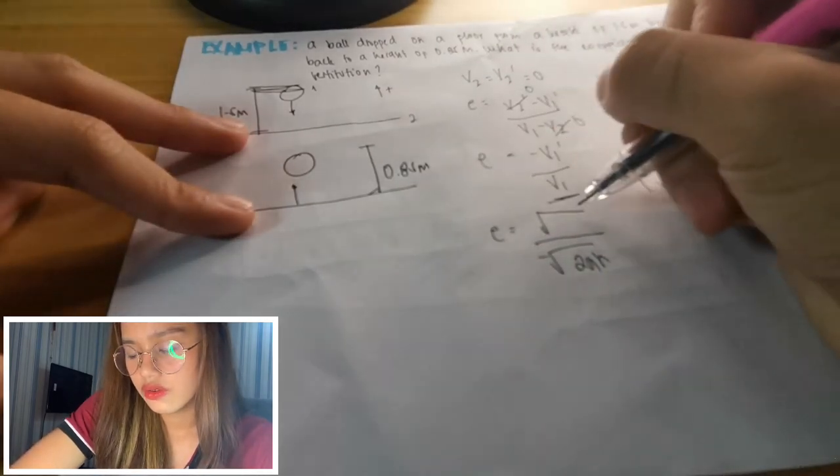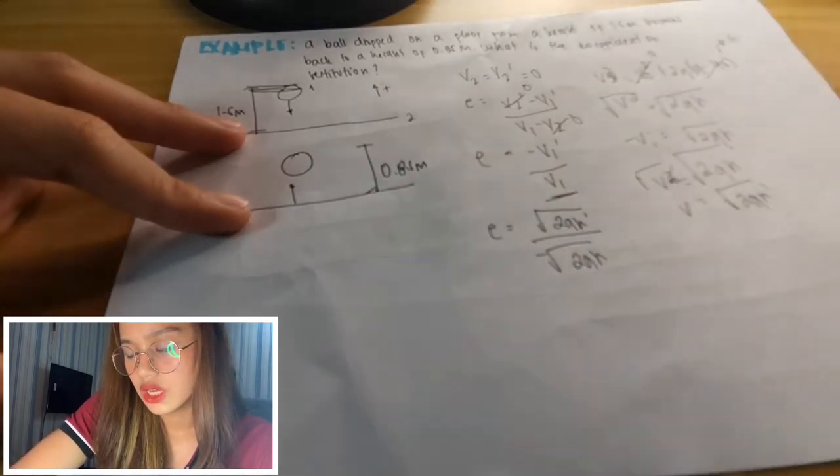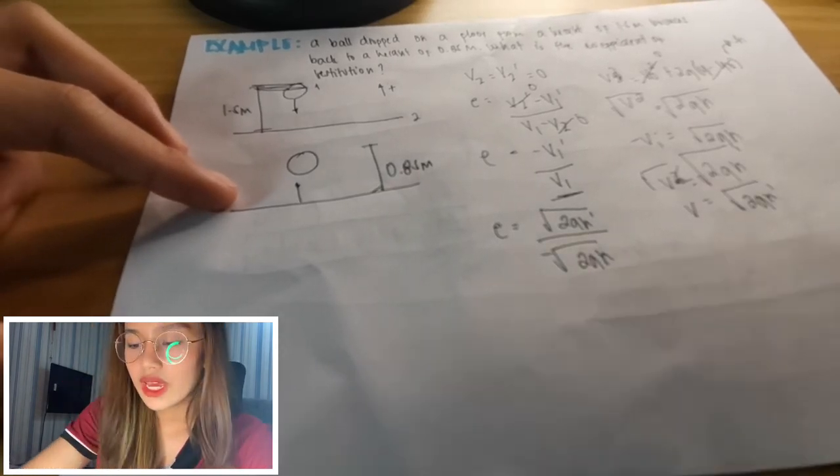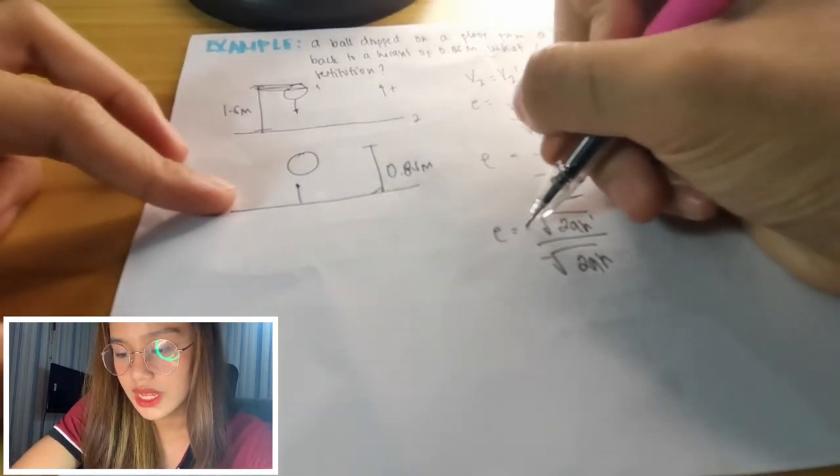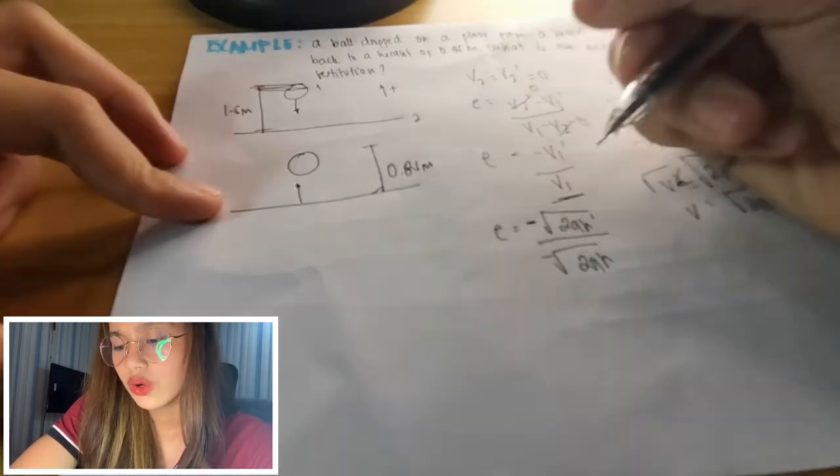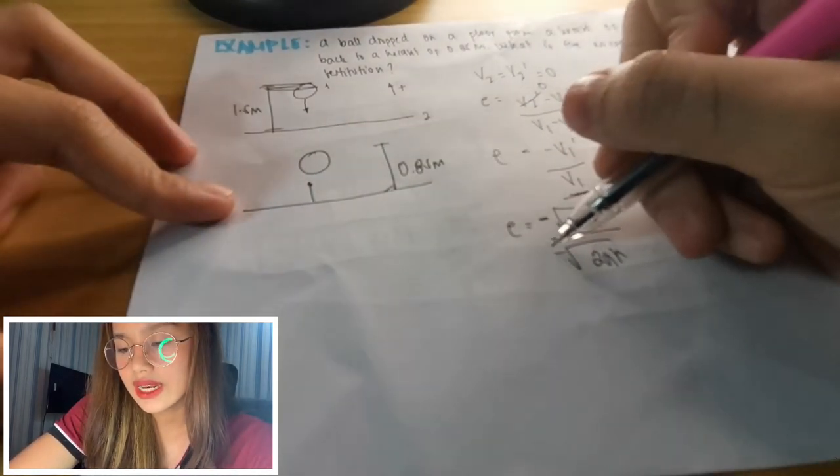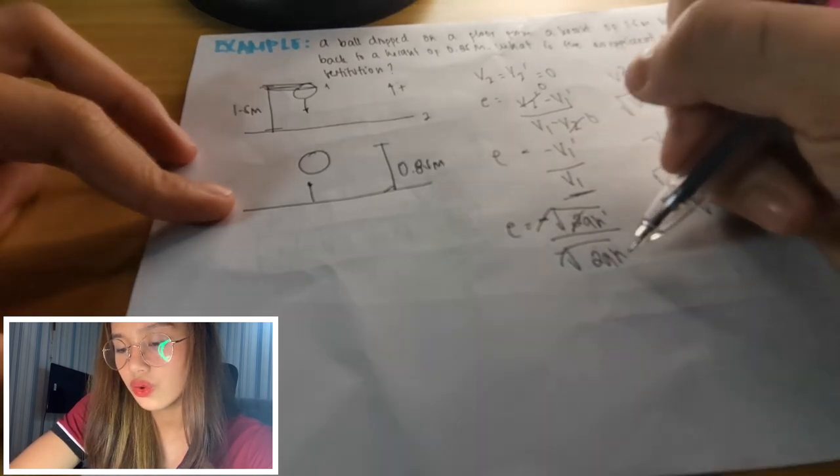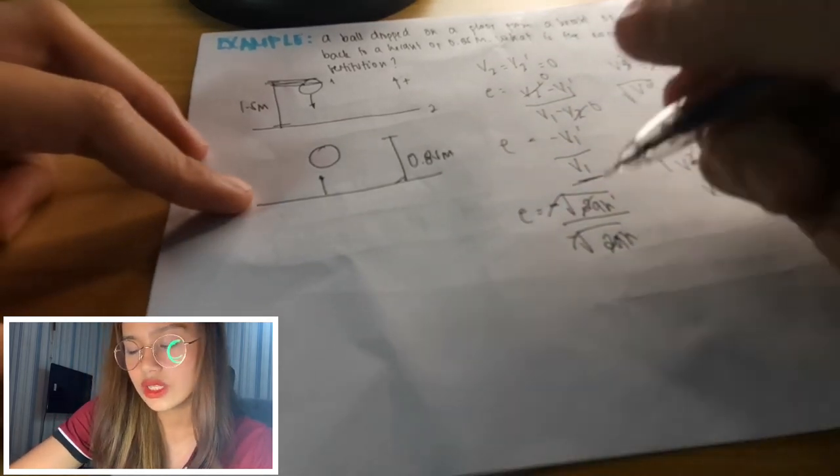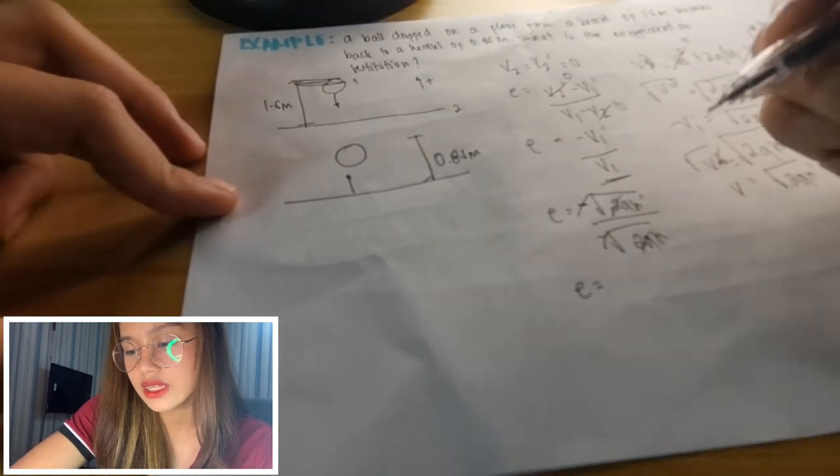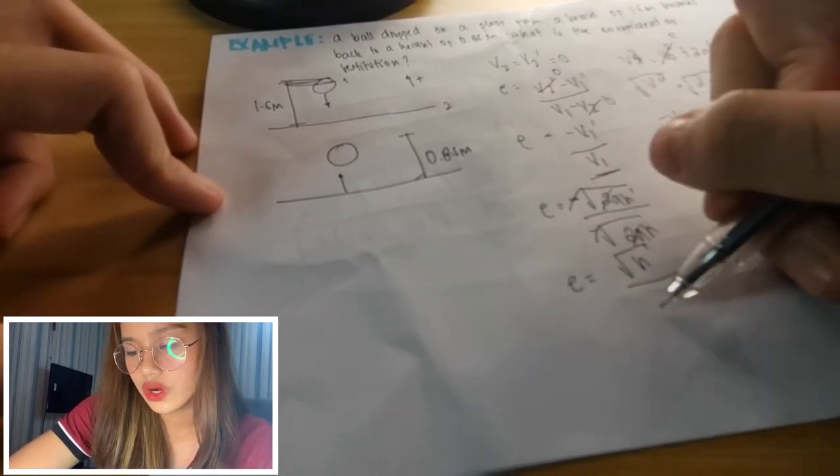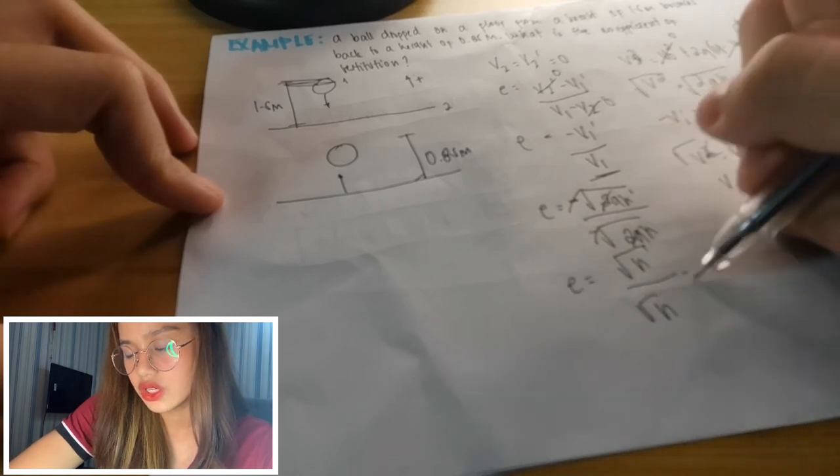Square root of 2gh prime. Now it's negative, right? So we'll put the negative here. Now, we'll cancel. We can cancel the negative sign and also the 2g. So what remains is the square root of h prime over square root of h.